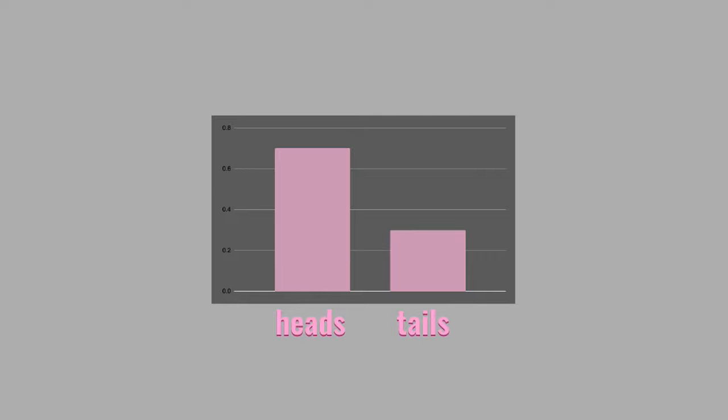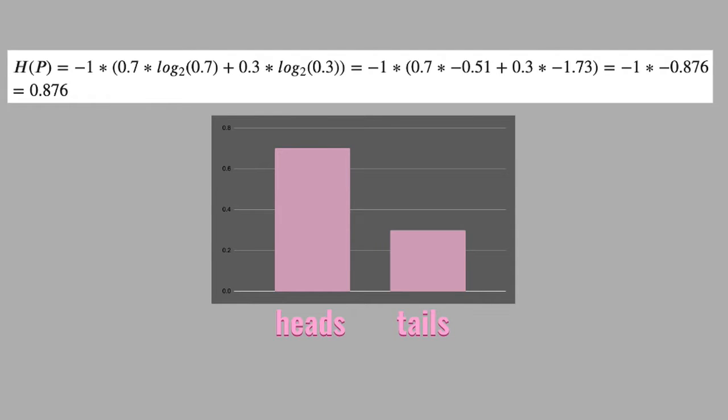The final comment about this formula that I want to make is that it measures the uncertainty of the distribution, not the exact number of bits we need in order to communicate the result. As we will see, these two quantities are closely related, but not identical. For example, what if our coin was not fair and had higher probability of landing on heads, but still, this was possible? We still need only one bit of information to convey the result, but when you carry out the calculation, the entropy is down to 0.876.